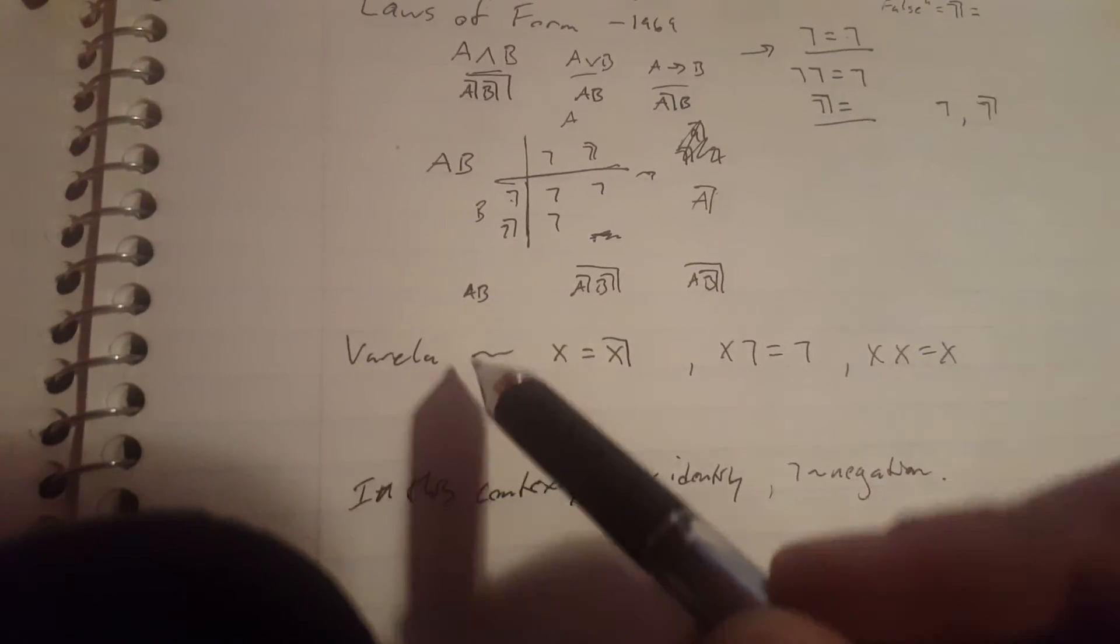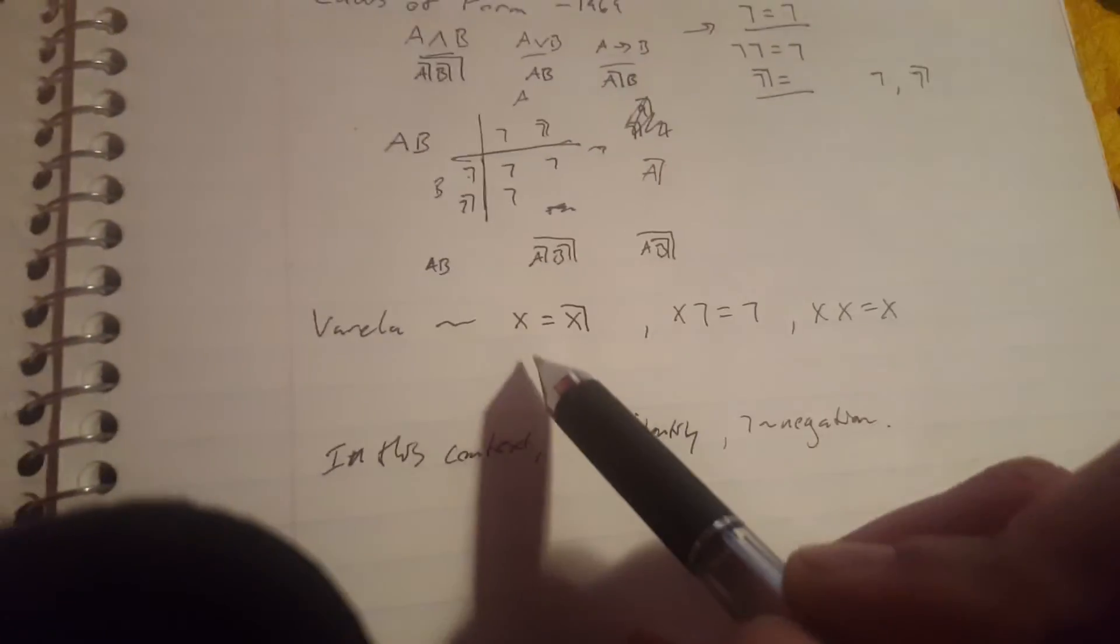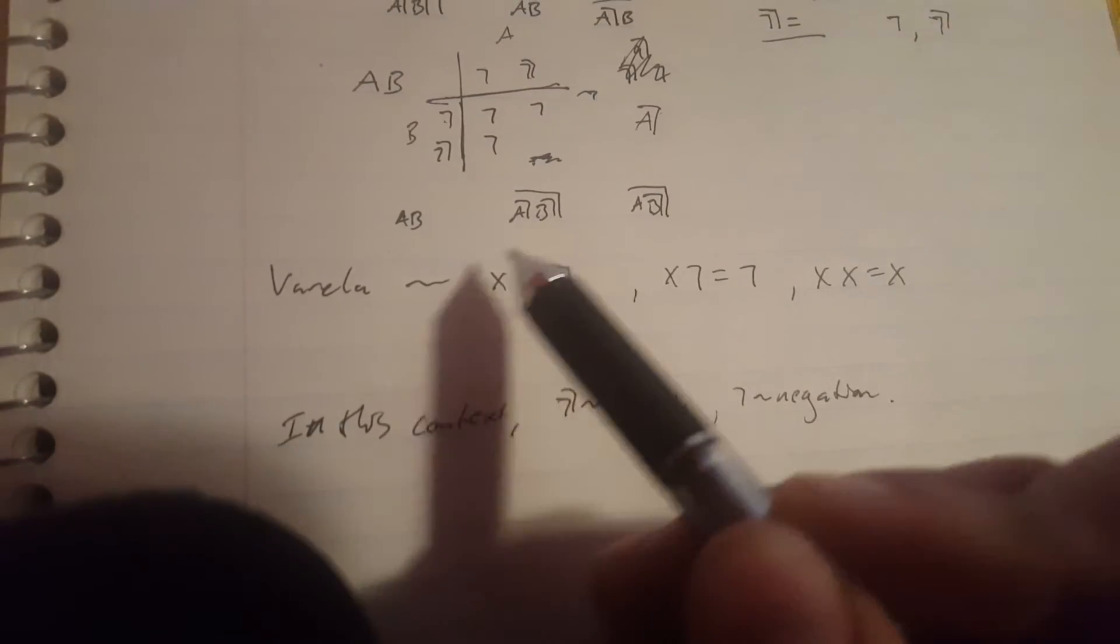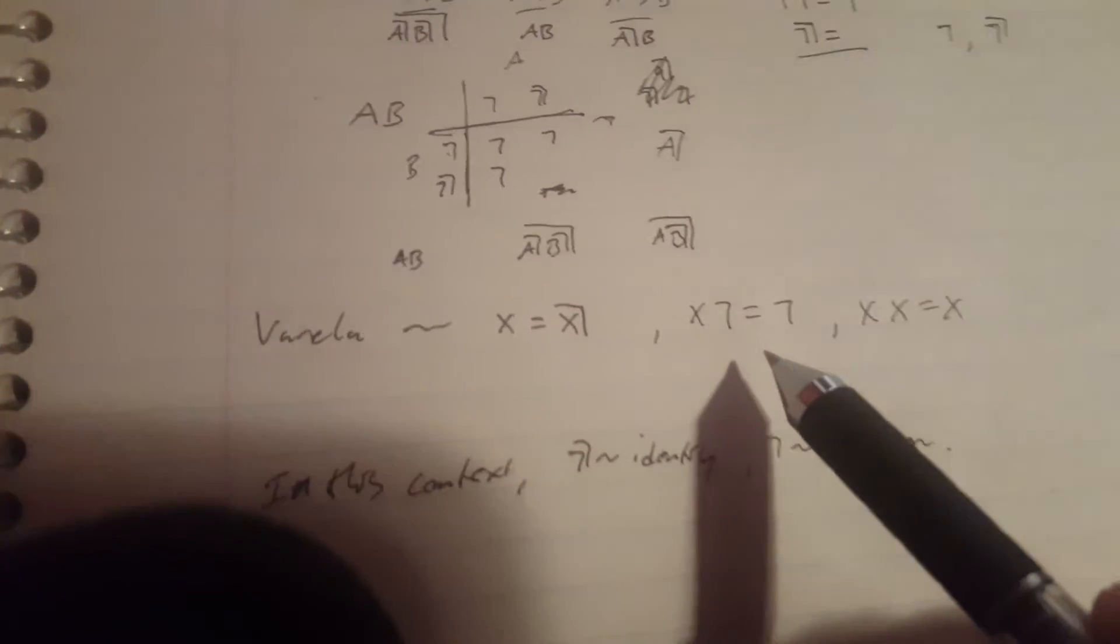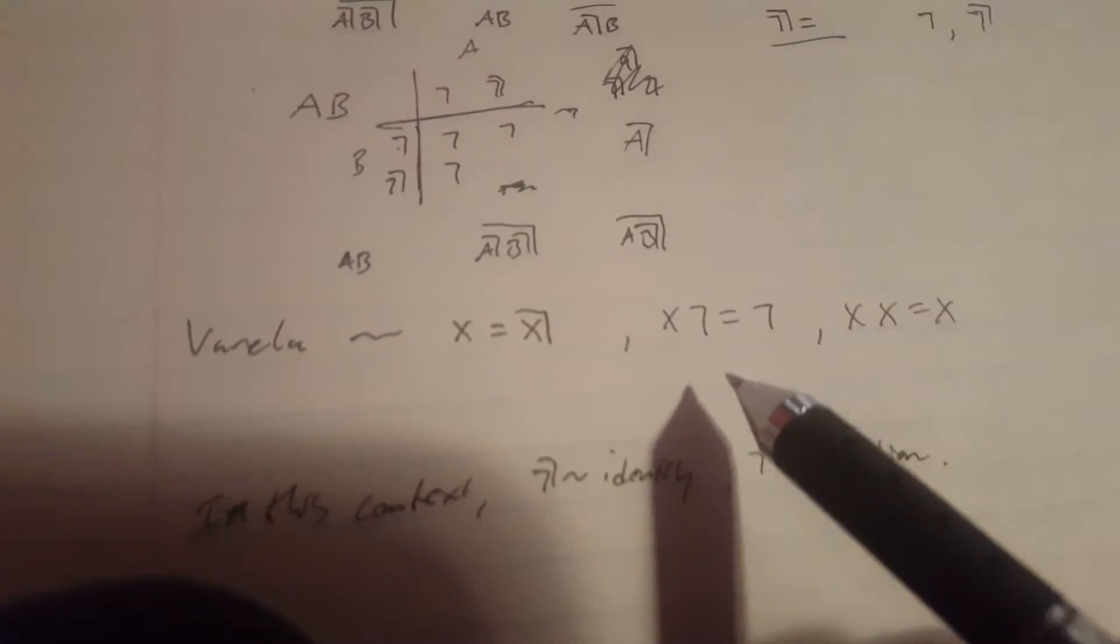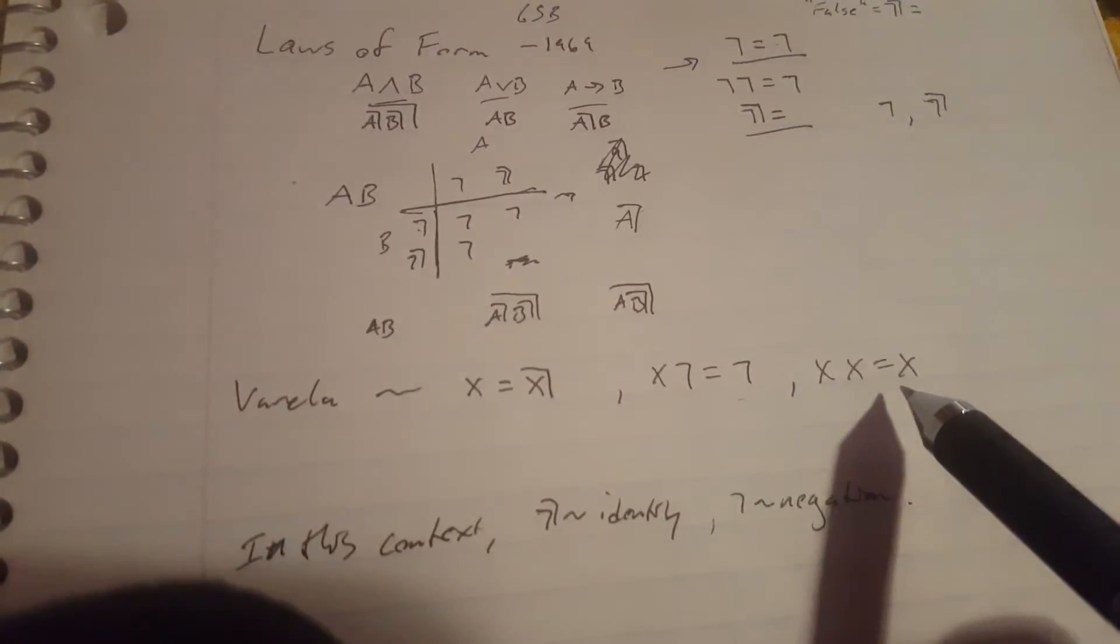So Varela, I forget what year he published this, I should have looked it up before this. He pointed out that really what's going on, there's a variable state that can be defined by contradiction, which seems to confuse the bejesus out of Louis Kauffman. He writes a lot about this kind of oscillation that you get logically when you start to follow these recursive definitions. But he pointed out a rule of dominance and a rule of duplication.